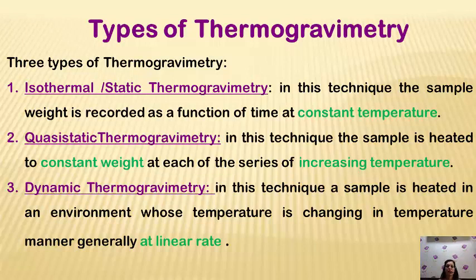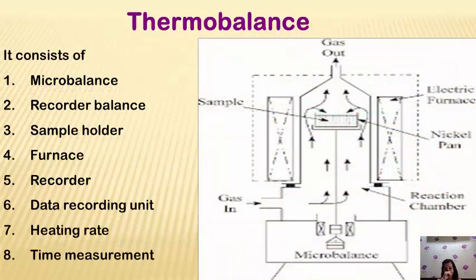Third is dynamic thermo-gravimetric analysis, where the sample is heated in an environment whose temperature is changing in a linearly programmed manner. The main component in thermo-gravimetric analysis is the thermo-balance, where the sample is kept in a container with a thermocouple near it. You also have a micro-balance, recording balance, and sample holder. These are the furnaces and the data recording unit. You have to maintain the heating rate and time measurement.